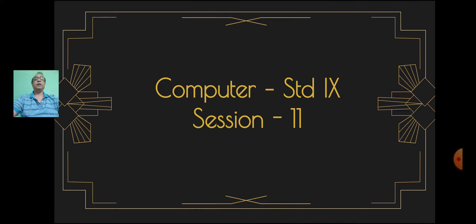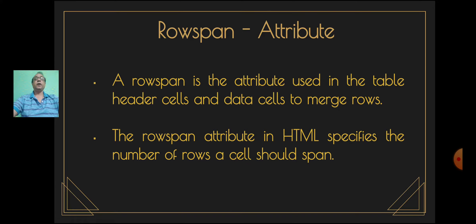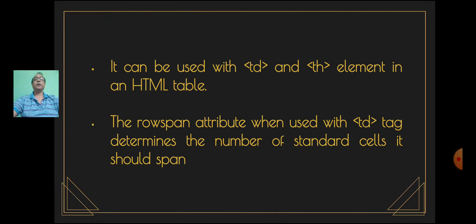Today we shall see the next attribute: rowspan. Rowspan is the attribute used in table header cells and data cells to merge rows. The rowspan attribute in HTML specifies the number of rows a cell should span. It can be used with the td and th elements in an HTML table.